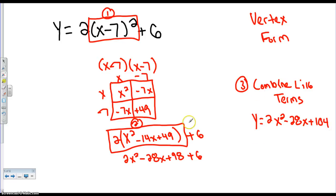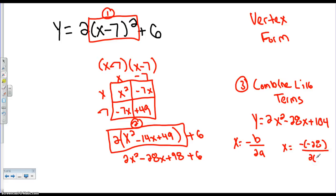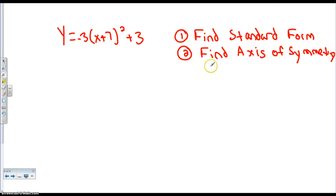Now, if I want to find the axis of symmetry, remember x equals negative b over 2a. I get x equals negative of negative 28 over 2 times 2, which is 28 over 4, so x equals 7. The steps are: first square the binomial by multiplying it out, then distribute the coefficient throughout the parentheses, then combine like terms. Can you guys try this one? I'll give you about 4 minutes, then show you the answer.